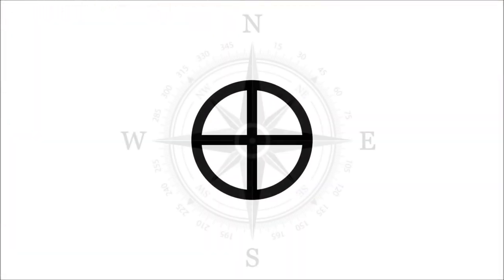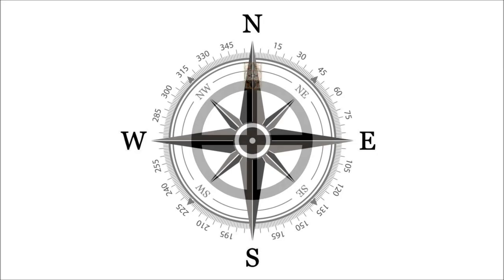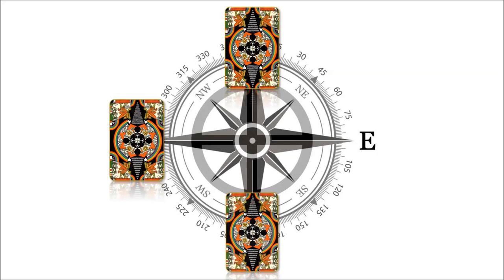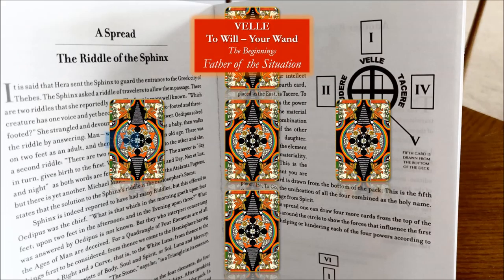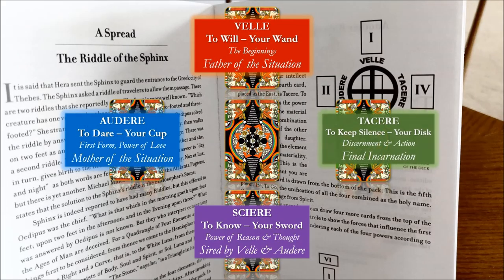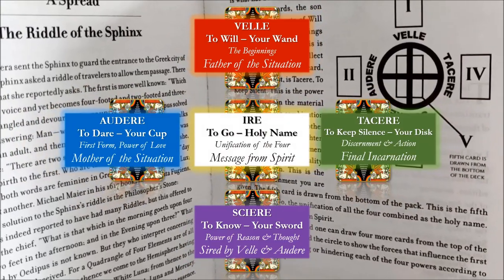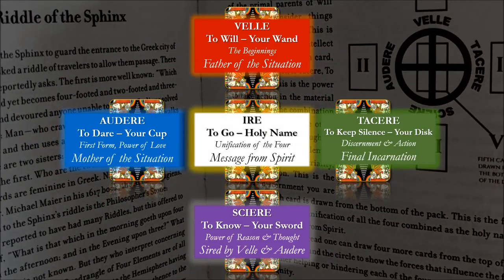We are now ready to work through the divinatory reading together, which will include the invocation of Haru in the name of IAO. So get comfortable. On screen you're being reminded of the tarot spread we'll be using. Take a moment to shift mindset, deepen and slow your breath. You may want to pause the video here, light incense, darken the room, clear your space, and proceed when ready.